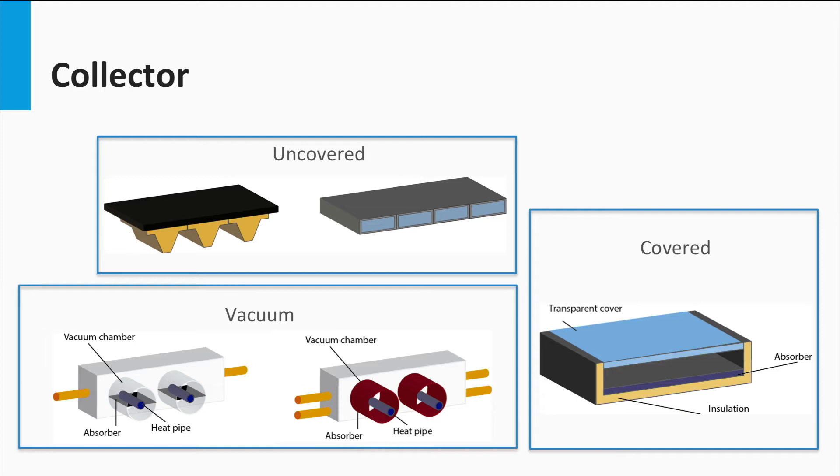Finally, in vacuum collectors the absorber is encapsulated in a vacuum space. In that case, little heat is lost to the surroundings. The manufacturing process of these collectors is more complicated and expensive. But the collector can be used for relatively high temperature applications, since the convection losses to the surroundings are considerably lower than for the other types.